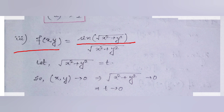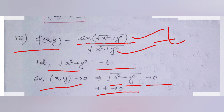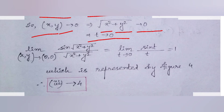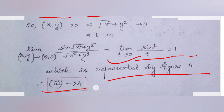For option three, f(x,y) = sin(√(x²+y²)) / √(x²+y²). Let t = √(x²+y²). As (x,y) → (0,0), t → 0, so the limit becomes lim(t→0) sin(t)/t = 1. This is represented by figure number four, so option three belongs to graph four.